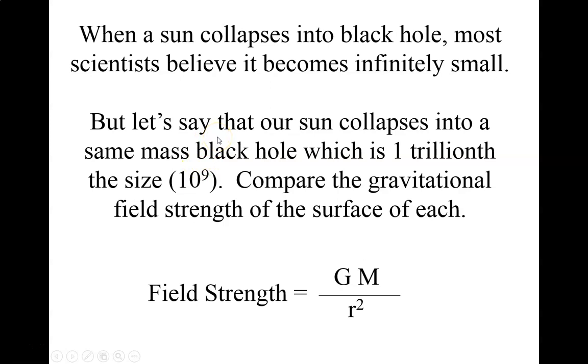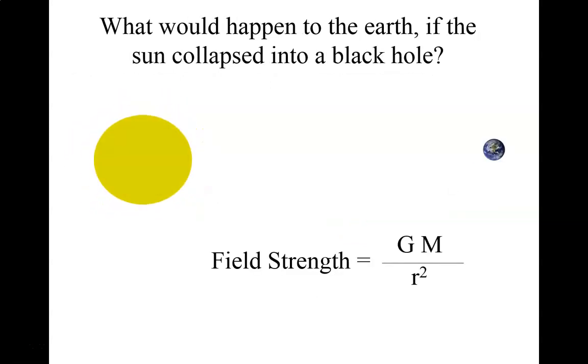When a sun collapses into a black hole, most scientists believe that it becomes infinitely small. Let's say that our own sun collapses into the same black hole, which is one trillionth the size. Compare the gravitational field strength at the surface of each. Well, if we get 10 to the ninth smaller by forming a black hole, that means gravity will be 10 to the ninth squared stronger at its surface. 10 to the 18th times stronger. That is, that's a big difference.